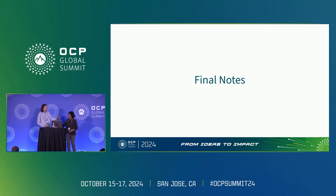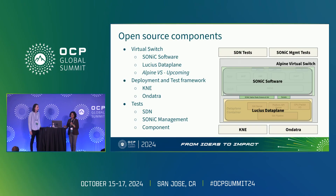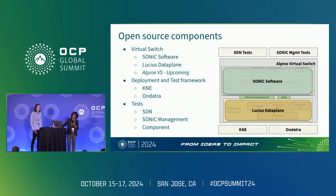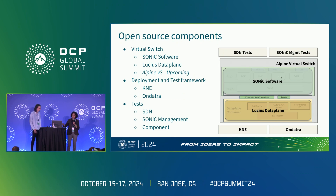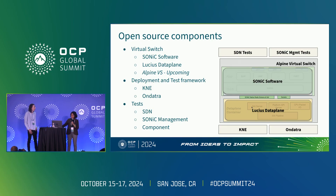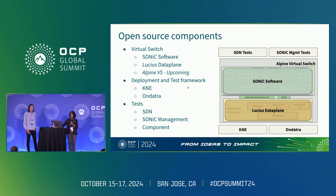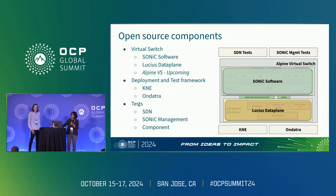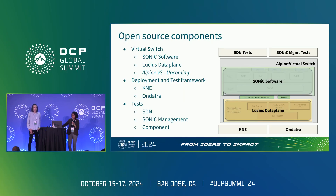Most of the components we talked about are open source. The Alpine virtual switch comprises the SONiC software running inside the VM in the green container — completely open source — and the Lucius data plane implementation, also open source. The Alpine VS glue components will be upstreamed soon. The deployment and test framework KNE is Google's open-source tool, and ONDATRA is also an open-source test framework developed by Google. For tests, we use regular SONiC tests, some SDN tests, SONiC management tests, and component tests.